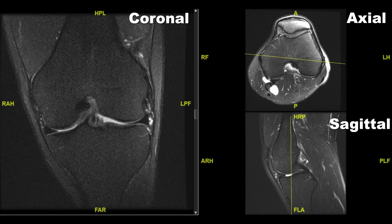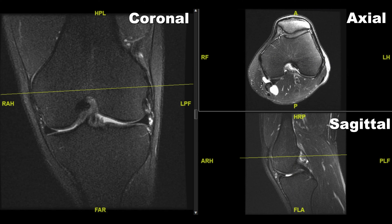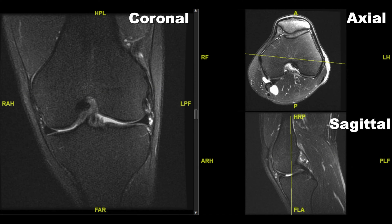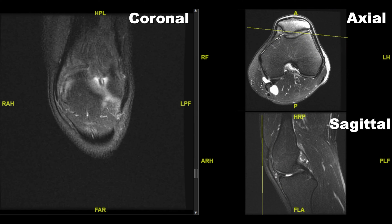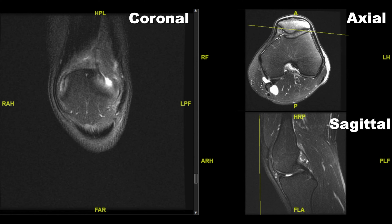Let's look at the axial. This is the front of the knee, or anterior; this is the back, or posterior; this is the outer side called lateral; and this is the inner side called medial. Let's start all the way at the front of the knee. On the coronal we can just see our kneecap, our patella, and the localizer line is showing us where this coronal image is in relation to the axial image.